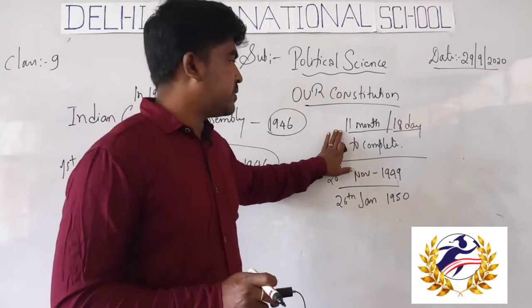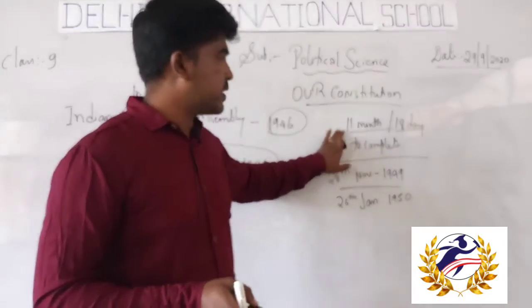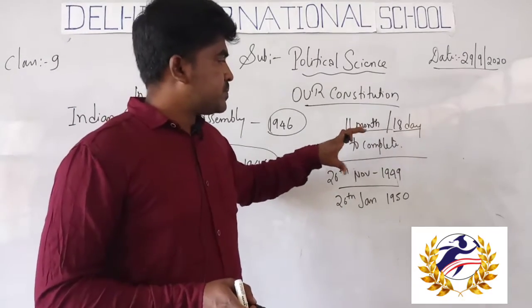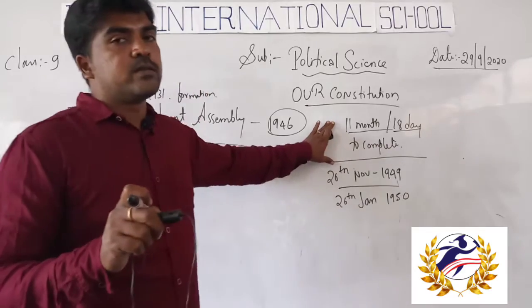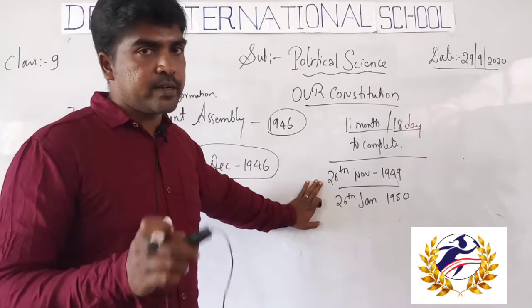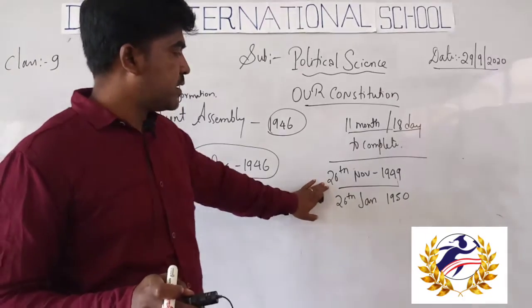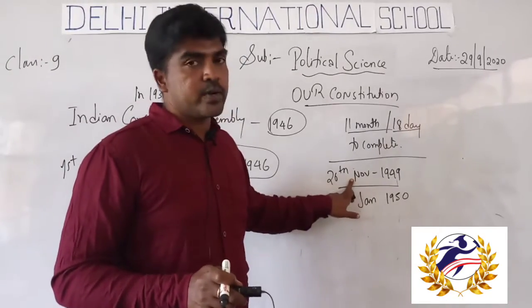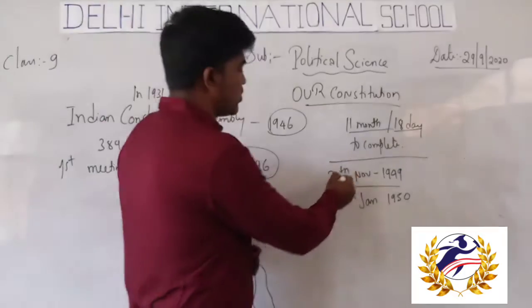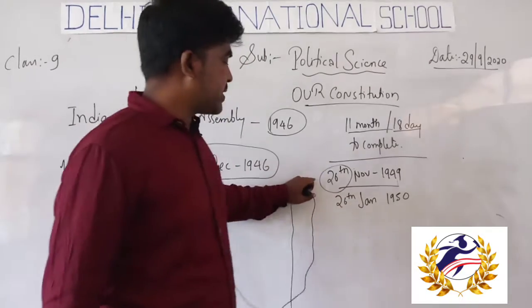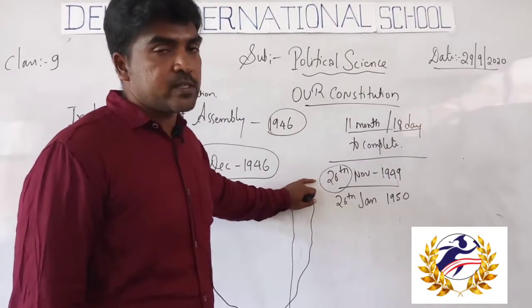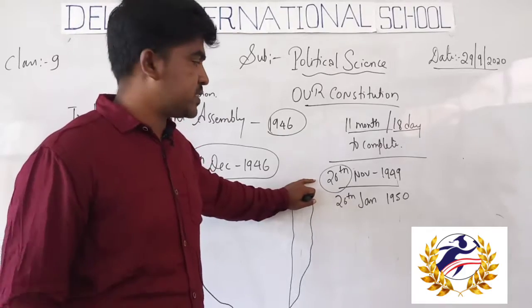The drafting committee took 11 months and 18 days to complete the Indian Constitution. It was finally completed on 26th November 1949. Every year, 26th November is celebrated as Constitution Divas, also known as Samvidhan Divas — the Constitutional Day.